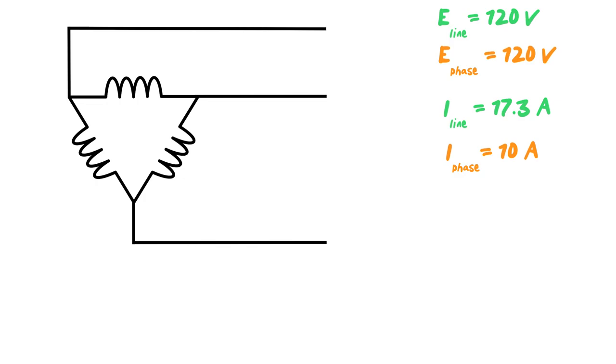So now what we can do is we can use those formulas that we talked about earlier in the video to see if they all come out to be fairly close to one another. So let's take VA equals 1.73 times E line times I line, E line 120 times 17.3 times root three will give us our answer. And there we go. We end up with roughly 3,600 VA. 1.73 times 120 times 17.3 gives us 3,591.8 VA. But for all intents and purposes, let's just kick it up to 3,600.